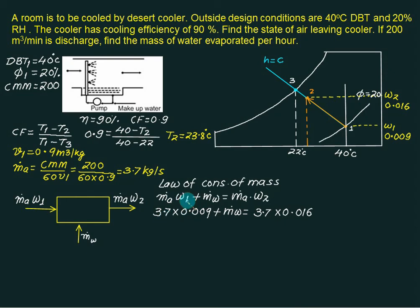So mass of air is 3.7. W1 is 0.009. Mass of water we want to find out. Mass of air is 3.7. W2 is 0.016.